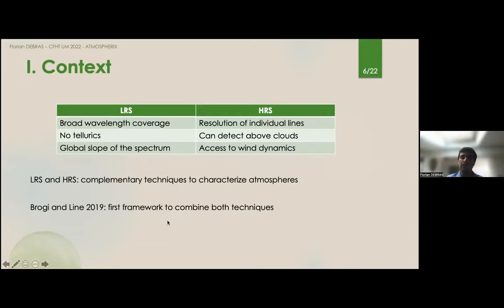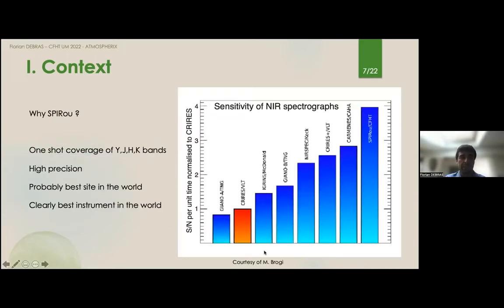Speaking about SPIRou, why do we want to use SPIRou for atmospheric characterization? Well this slide from Matteo Brogi, which is not a SPIRou user but rather a GIANO and CARMENES user, is a very good example. It shows the expected signal to noise for each of the main near infrared spectrographs used for exoplanet characterization today.